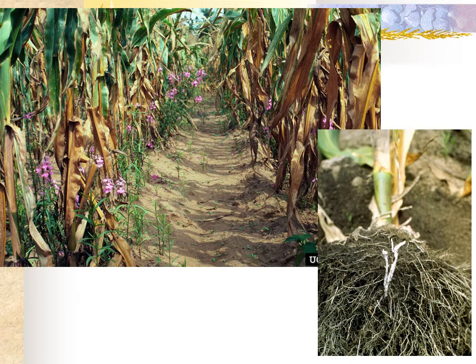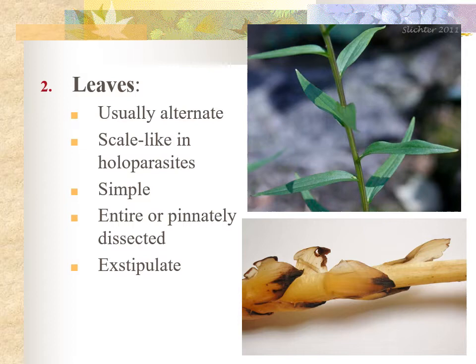Leaf arrangement in the Orobankaceae is generally alternate, and the leaves themselves are usually simple. In the holoparasites, though, the leaves are often scale-like, which makes sense because holoparasites are fully parasitic and the leaves no longer perform photosynthesis. The leaves are generally entire or pinnately dissected, and they are also exstipulate — without stipules.